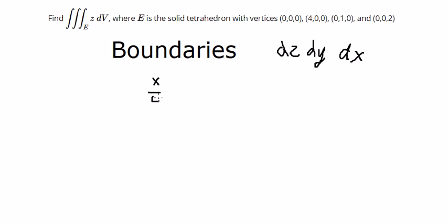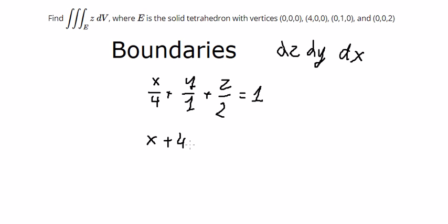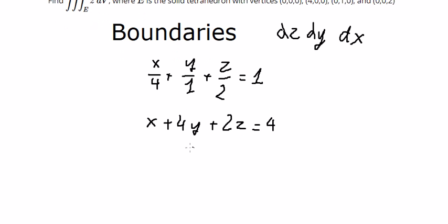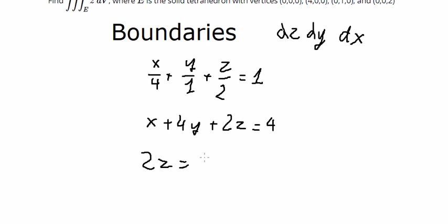We use the plane equation: x divided by 4 plus y divided by 1 plus z divided by 2 equals 1. We then multiply both sides by 4. Next, we find the boundary for dz. Moving terms to the right, we get 2z equal to 4 minus x minus 4y.